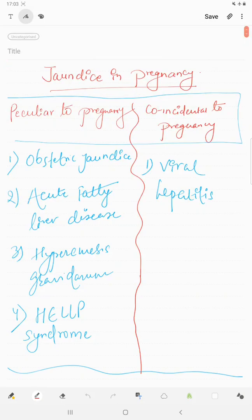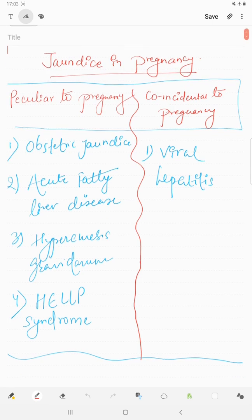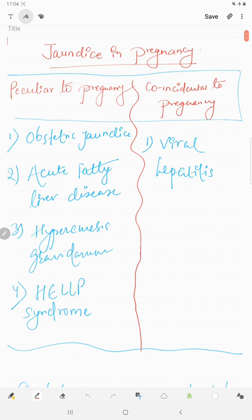Hello everyone, welcome to Medical MCDs. Today we are going to talk about jaundice in pregnancy. Some jaundice are peculiar to pregnancy, while others are coincidental to pregnancy. Viral hepatitis caused by hepatitis A, B, C, and E viruses cause jaundice that are coincidental.